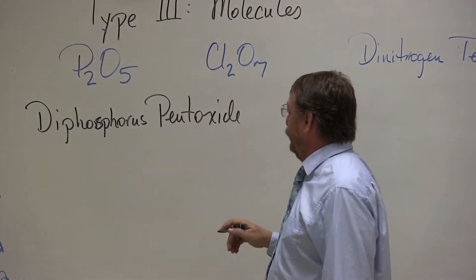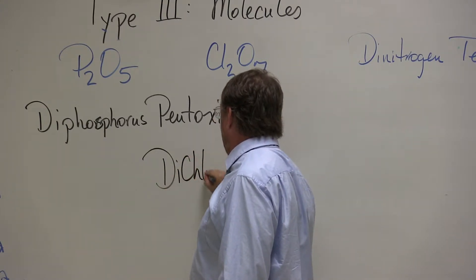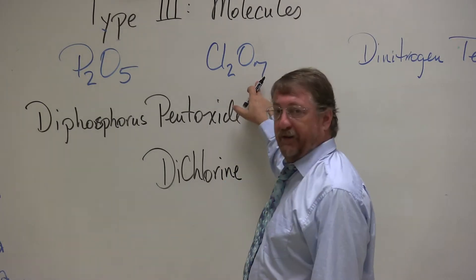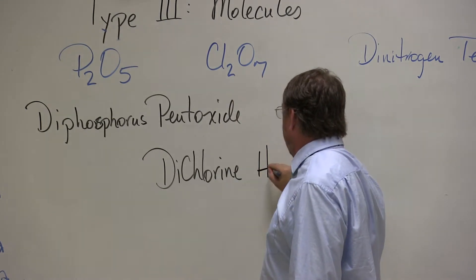Cl2O7. I have two chlorine, so it's going to be dichlorine. Seven oxygens, I'm going to identify how many there are. Seven is hepta, so I'm going to go heptoxide.